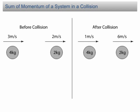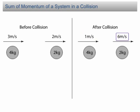Let's look at this example about the sum of momentum of a system in a collision. Two balls of mass 4 kg and 2 kg respectively are moving in the same direction in a straight line. The velocity of the ball at the back is 3 m/s higher than the velocity of the ball in front. Since the ball at the back moves faster, a collision will happen. After the collision, the balls move at 1 m/s and 6 m/s respectively.